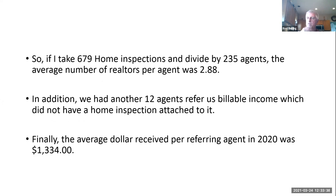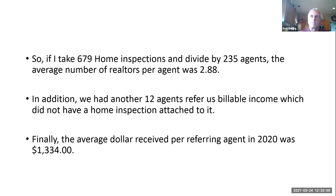I couldn't rely on just 10, 15, or 20 realtors. When I was teaching, I used to make a statement that you need to have 12 agents that gave you one inspection a month. I actually used to say you need 30 agents a year that would give you one inspection a month, because for a full-time home inspector that's 30 jobs a month. I know people may say they can do more than that, but when you start doing 30 to 35 home inspections a month, you're working a very full-time schedule. If you notice those numbers, we don't have 30 agents giving us 30 home inspections a year.